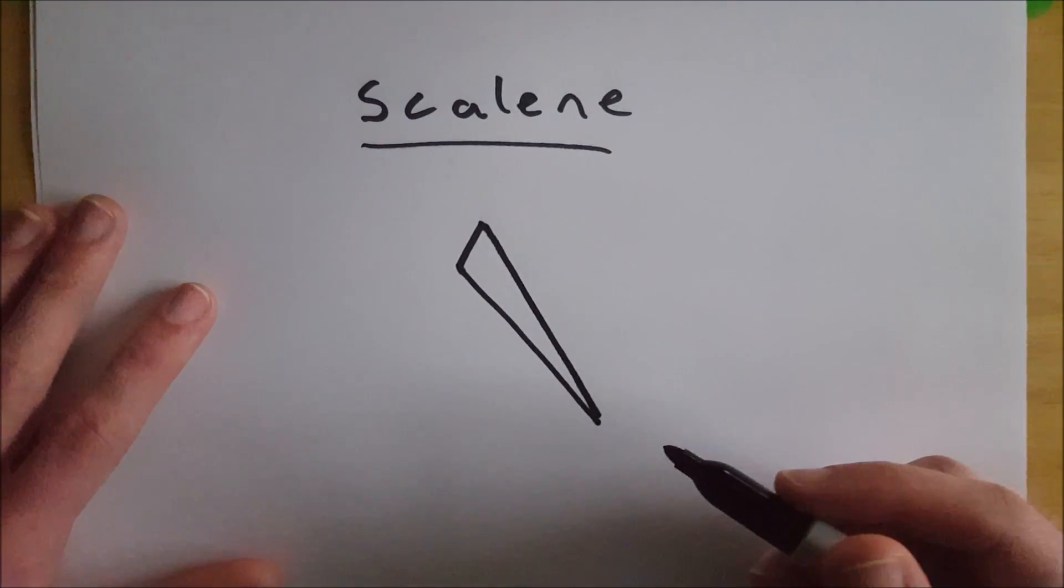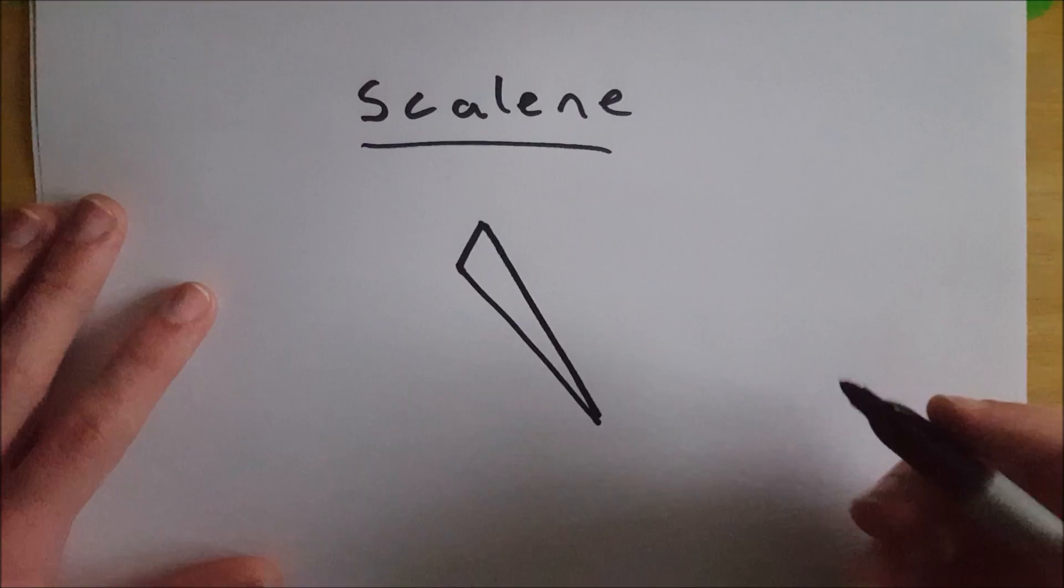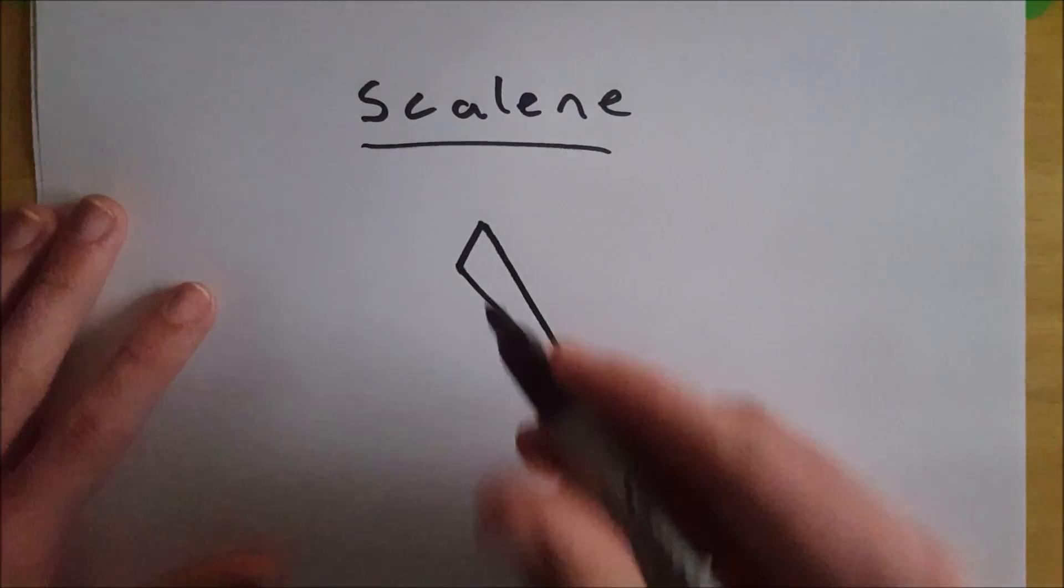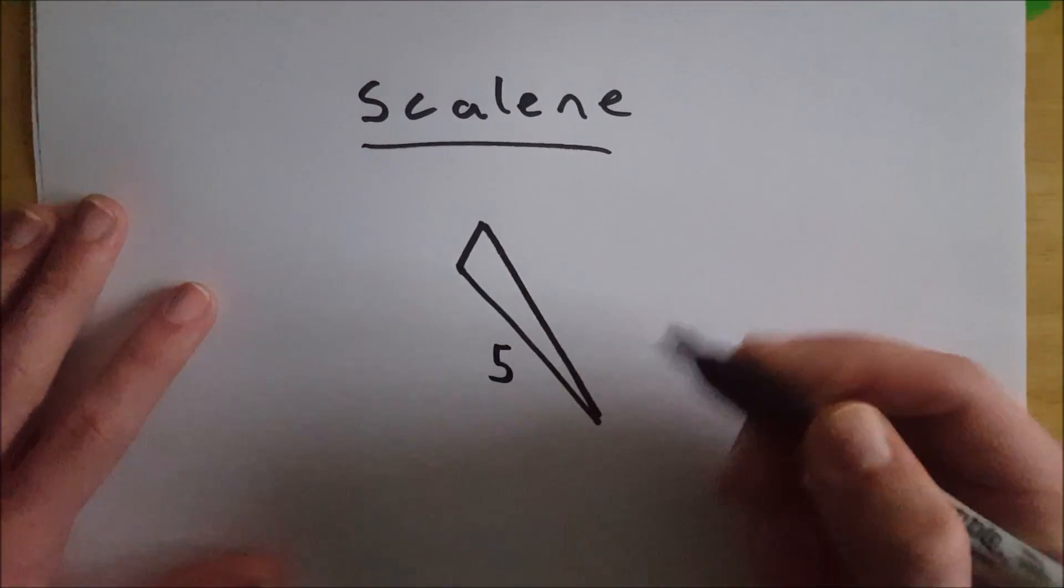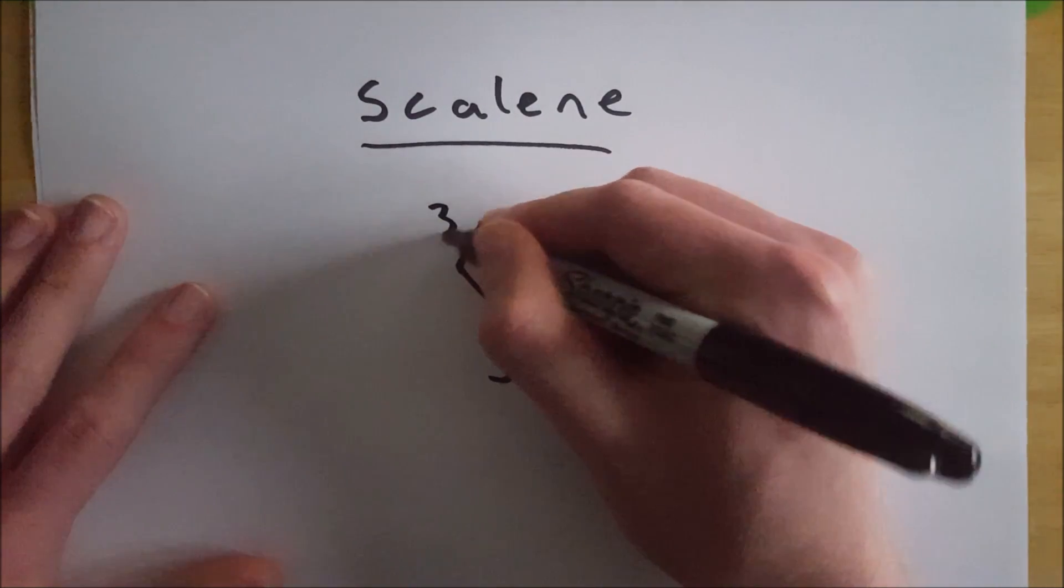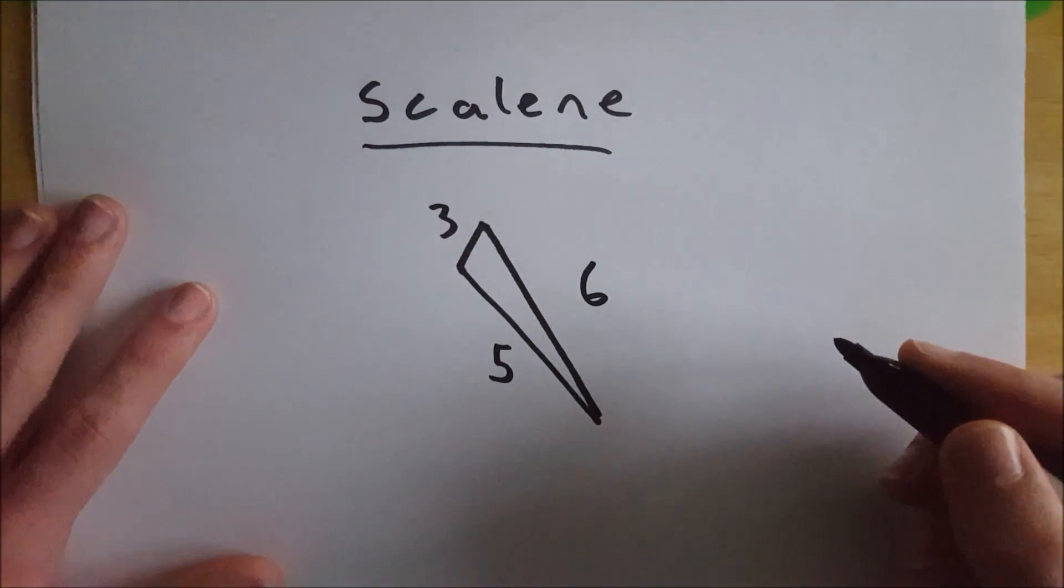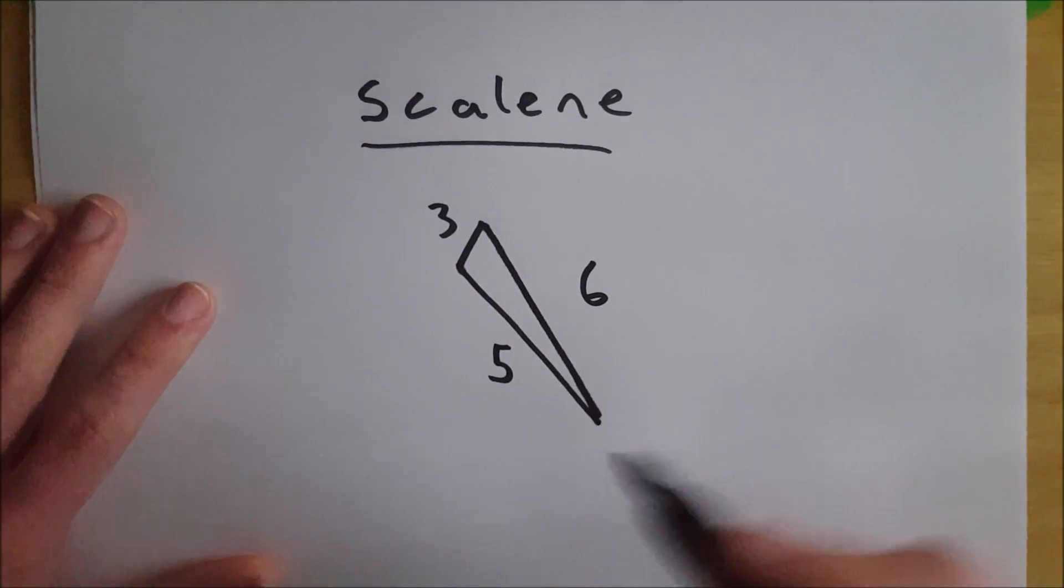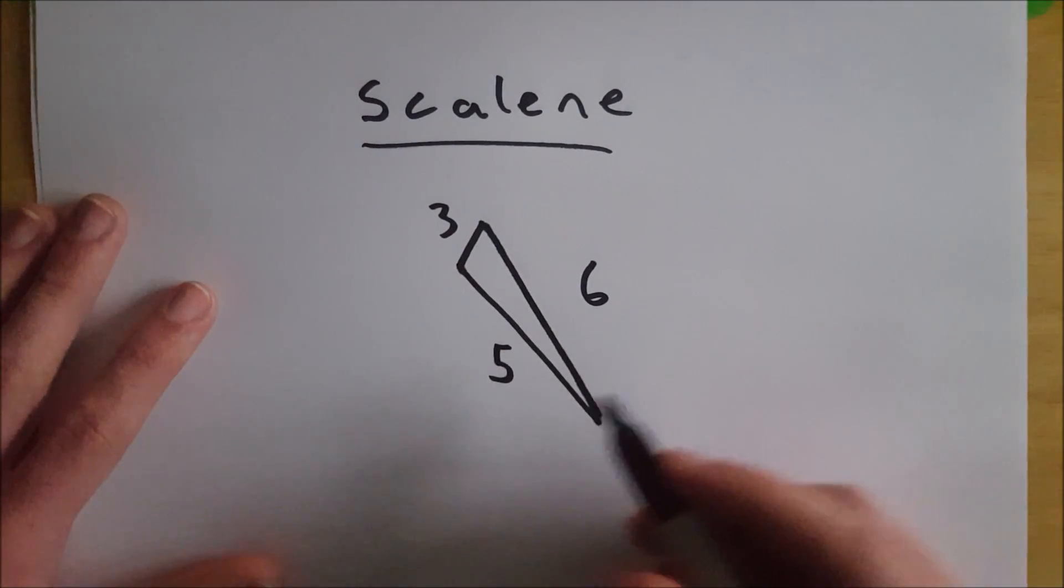So in a scalene triangle, none of these sides are equal. For example, in this triangle, this side might be 5 units, this one might be 3, and maybe this one is 6. That's totally not to scale at all. But that's how it might look.